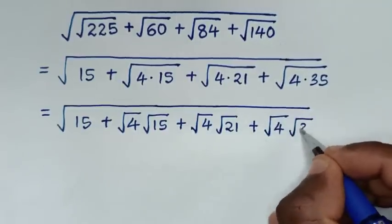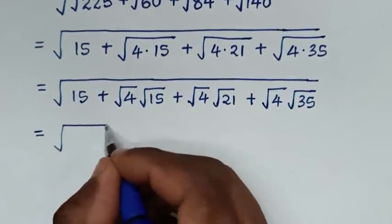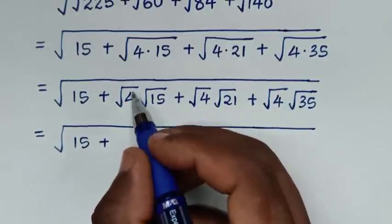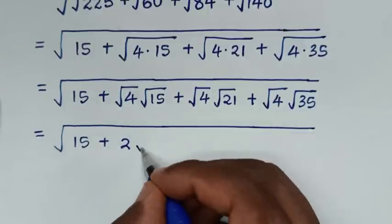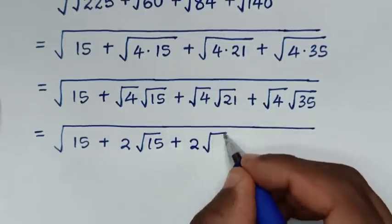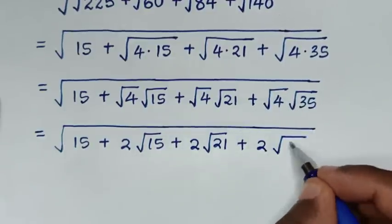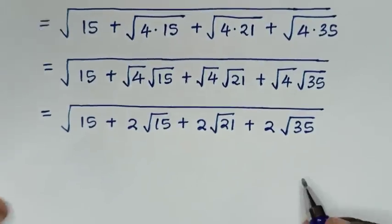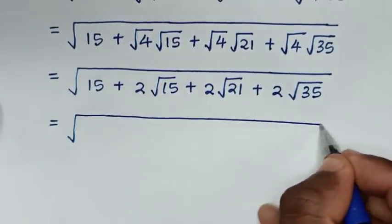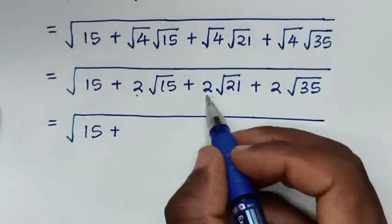So it will be equal to: square root of 15, then plus — since square root of 4 is 2 — 2 times square root of 15, plus 2 times square root of 21, plus 2 times square root of 35. In the next step it will be equal to square root of 15 plus 2 times square root of 15.